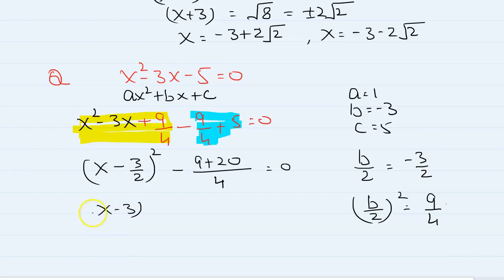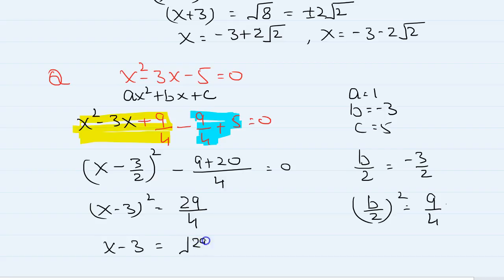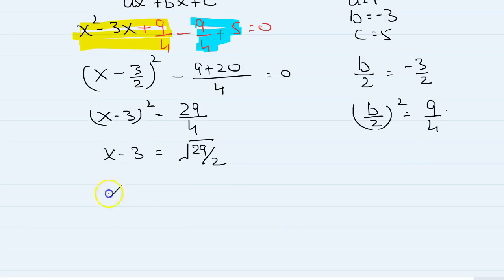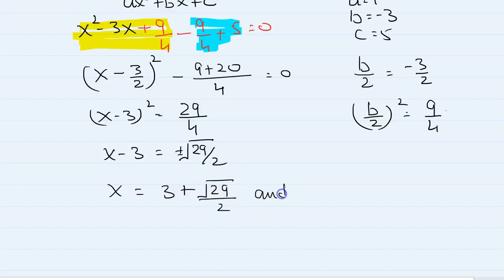The remaining part: minus 9 over 4 minus 5 gives minus 9 plus 20 over 4, which is minus 29 over 4 — wait, that is 29 over 4. So x minus 3 over 2 squared is equal to 29 over 4, and x minus 3 over 2 is equal to root 29 over 2. So x is equal to 3 over 2 plus or minus root 29 over 2, giving x equals 3 plus root 29 over 2 and x equals 3 minus root 29 over 2.